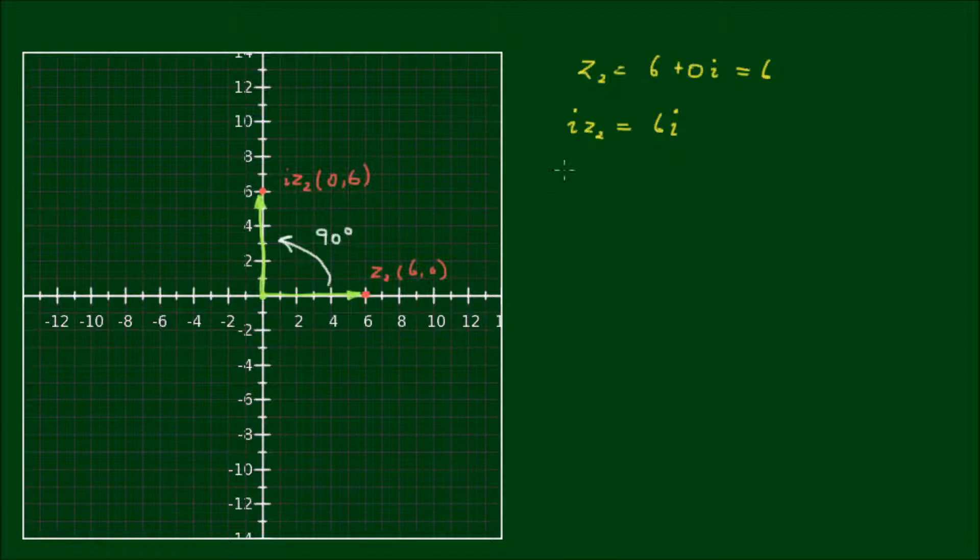So let's multiply by i again. So let's multiply this result by i. So we have i squared z2 is equal to 6i squared. And i squared is of course equal to negative 1. So we have negative 6.